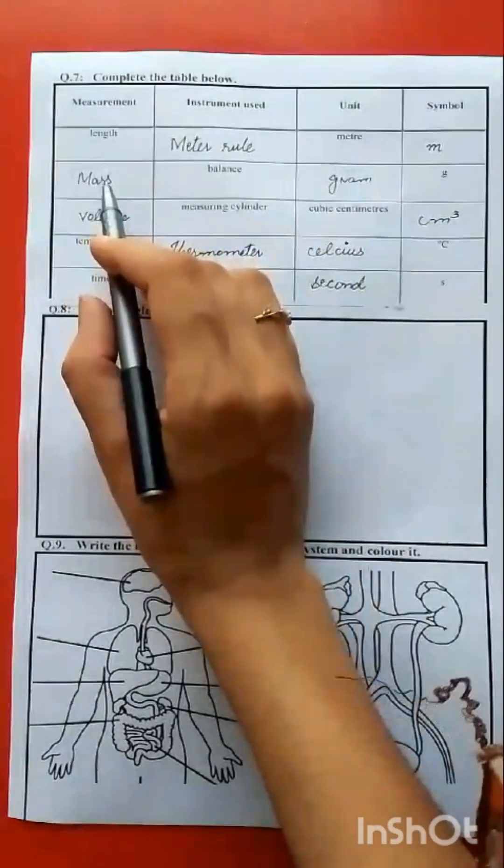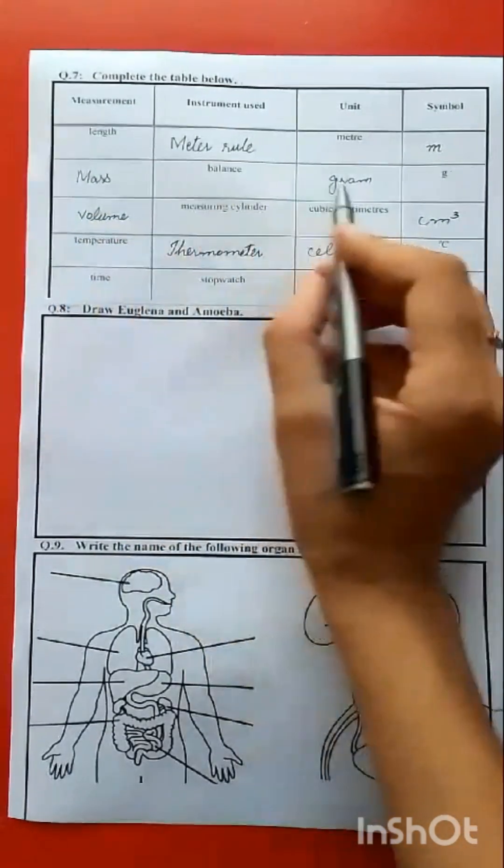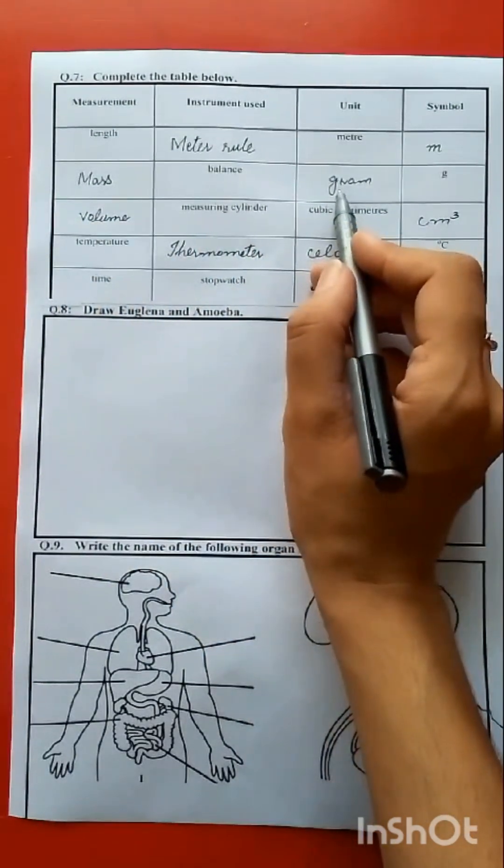Balance for mass, weight. The unit is gram.